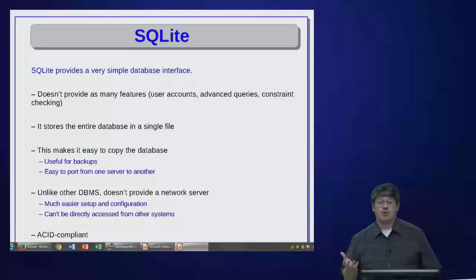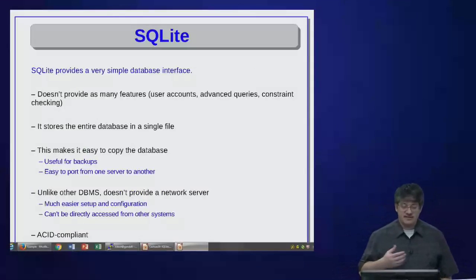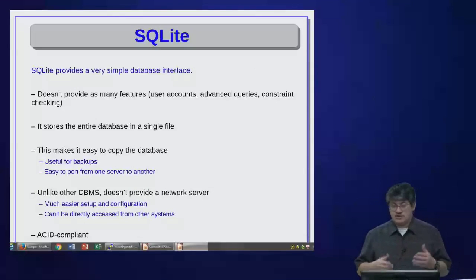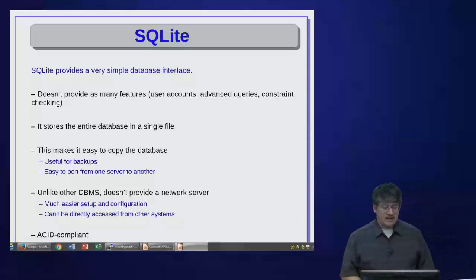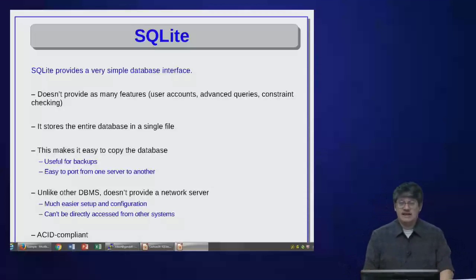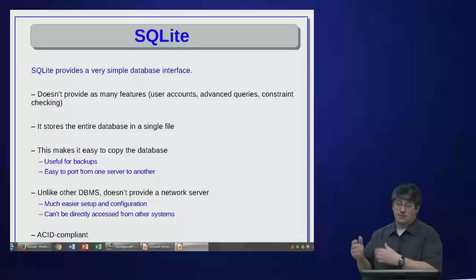One of the databases supported with DB-API 2.0 is SQLite. SQLite provides a very simple database interface — it doesn't provide very many features. For example, there's no concept of a user account, there aren't any advanced queries, you might be able to do aggregation but that's about it, and there's no constraint checking at the same level as Postgres or MySQL. So if we want a really advanced web application, we'll need to move to MySQL, Postgres, or something like Oracle.